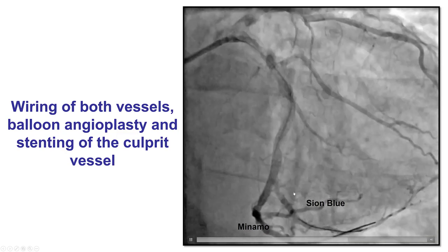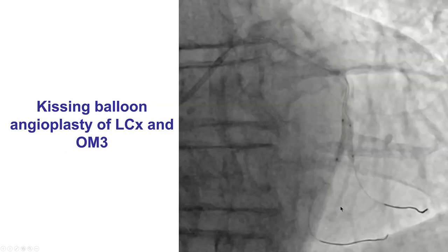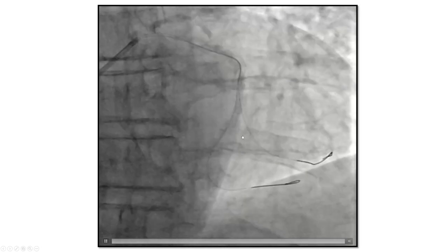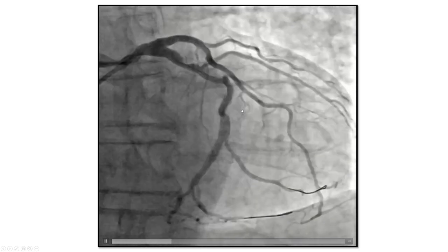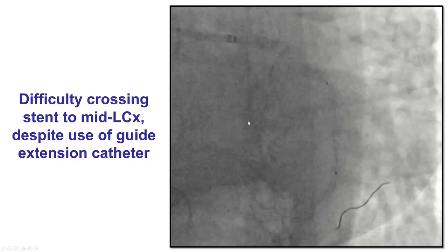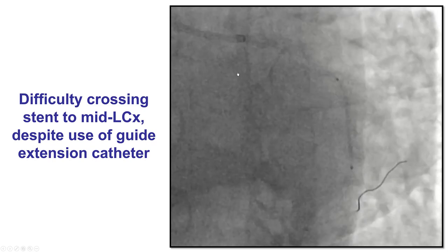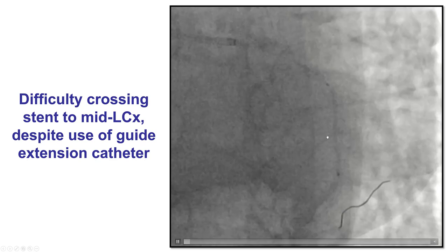We used workhorse guide wires to wire the distal circumflex as well as the third obtuse marginal branch, and then did kissing balloon inflation that significantly improved the stenosis. The result was excellent with TIMI 3 flow in both vessels. Sometimes we cannot necessarily put a stent and leave the lesion unstented, however in this case we decided to stent it, but we did have a lot of difficulty delivering equipment in the mid-to-distal circumflex, likely because of significant tortuosity, even though we used a guide extension.